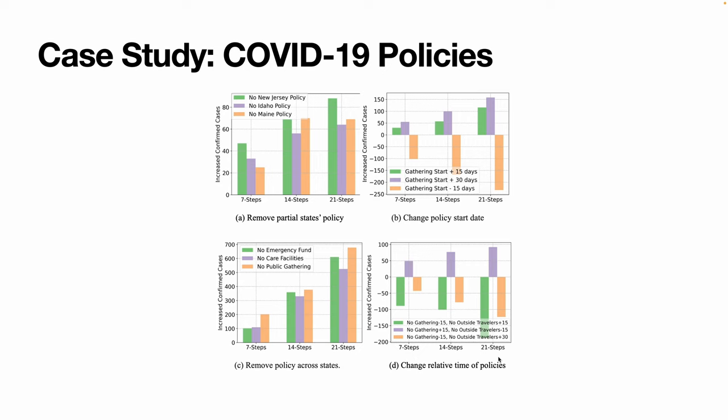We also conduct a case study to show the impact of different COVID-19 policies. Specifically, we consider four different policy intervention methods. First, we focus on the removal of policies in three states, which leads to an increase in confirmed cases.